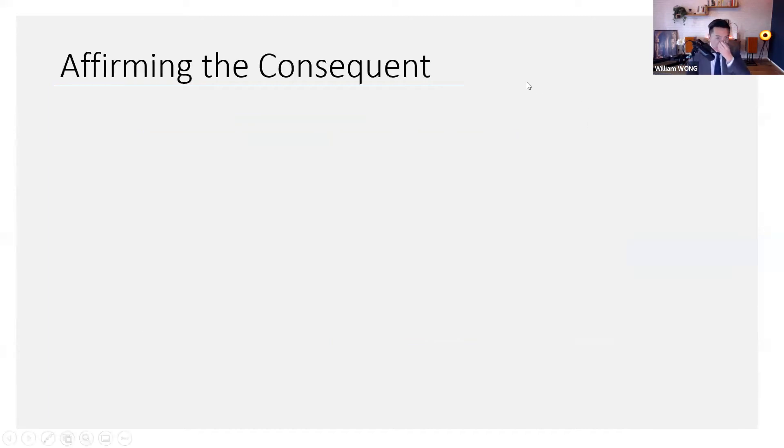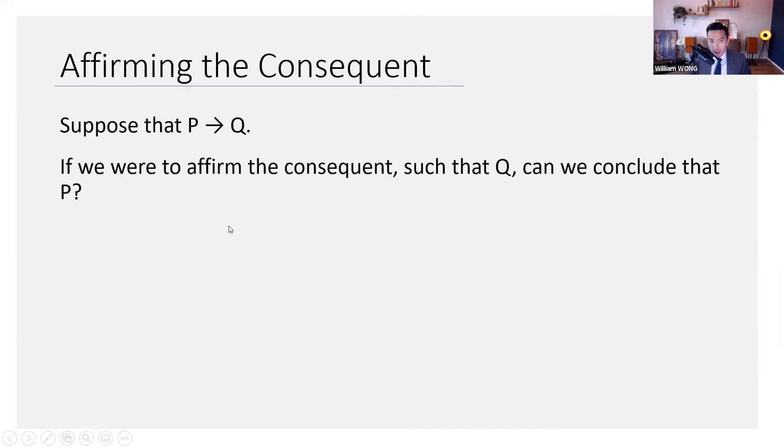Okay. In that case, we'll move on to our second form of fallacy. Now remember, there are two forms of fallacies that you have to know. The first is denying the antecedent. That is, to assert not P, in the case of P entails Q. Now, what about affirming the consequent?